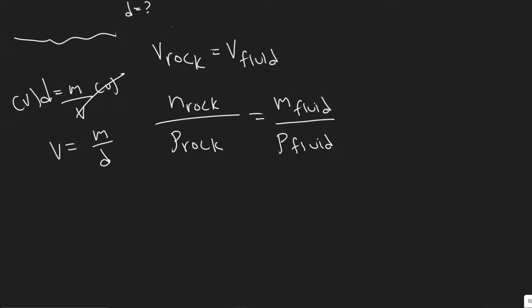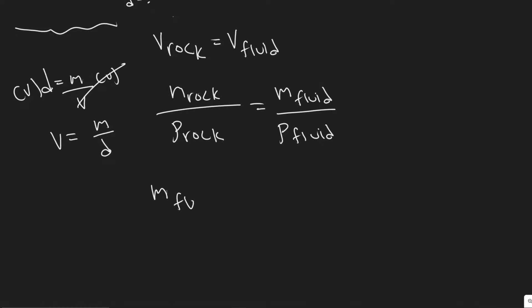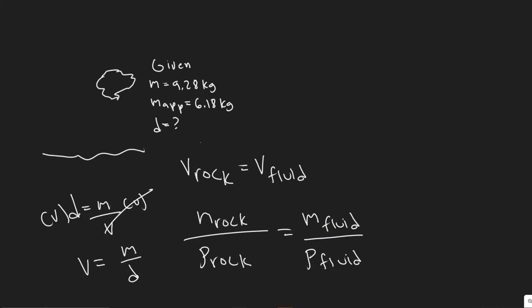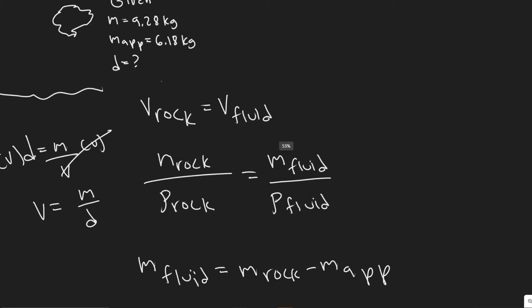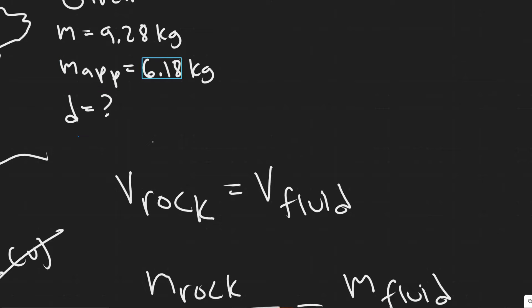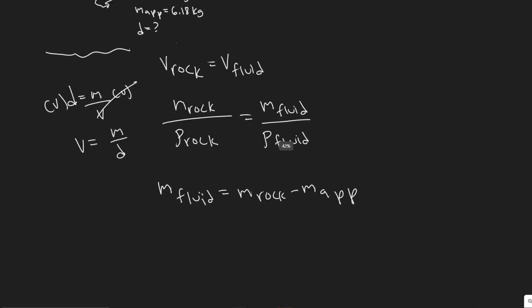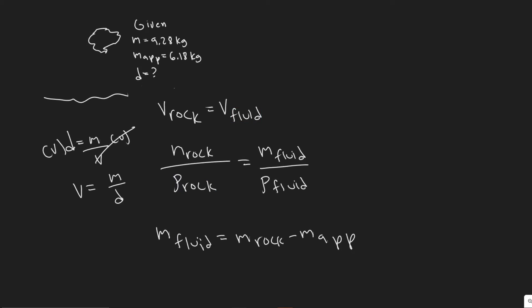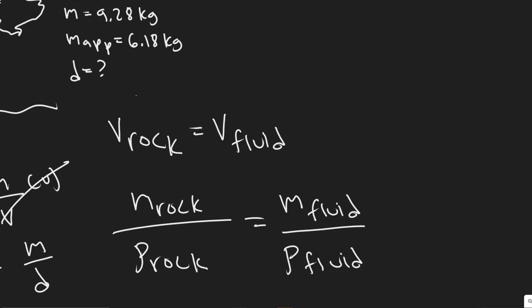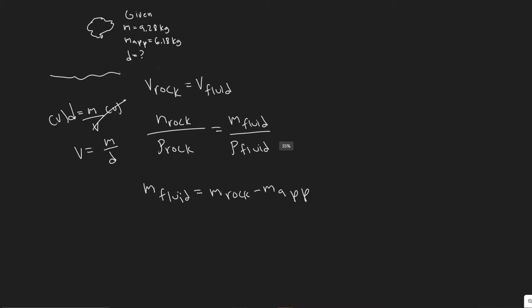The next thing we have to do is solve for the mass of the fluid. The mass of the fluid is going to be equal to the mass of the rock minus the apparent mass of the rock. The reason this works is because we're displacing fluid — the difference between them is the mass of the fluid because the apparent mass is reduced by the displaced water. So we have 9.28 minus 6.18, which gives us 3.1 kilograms.